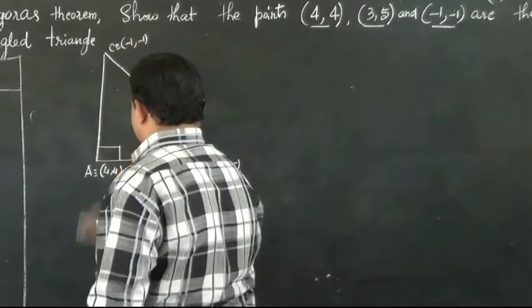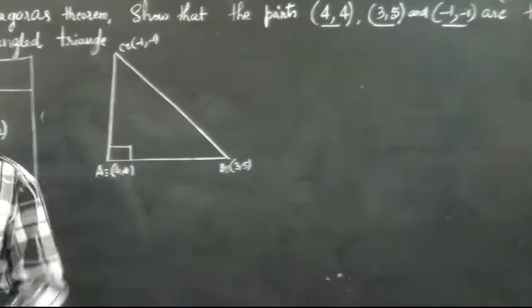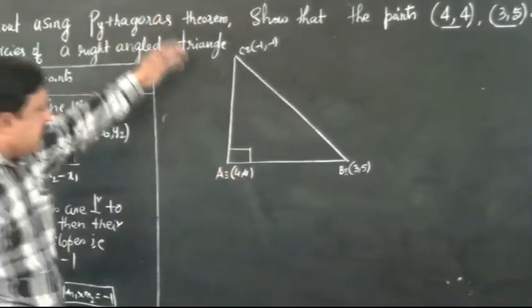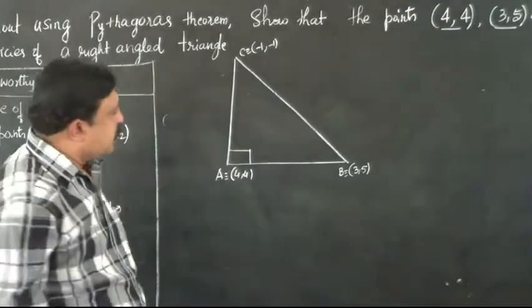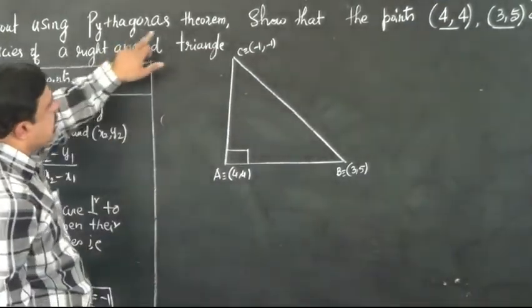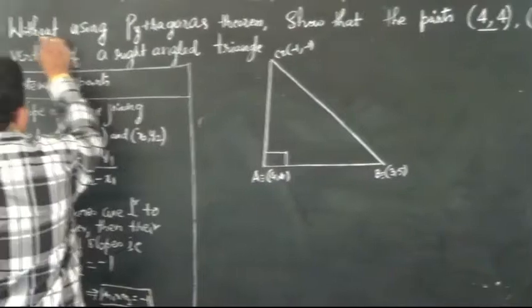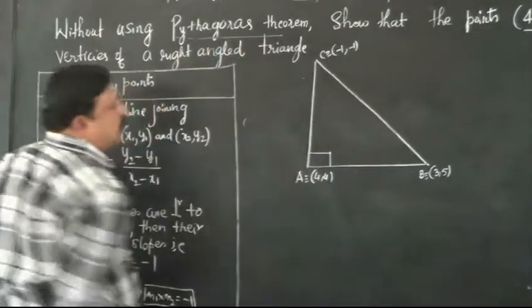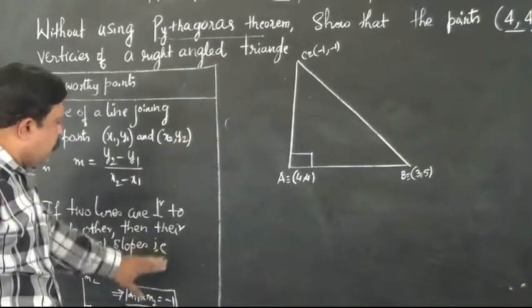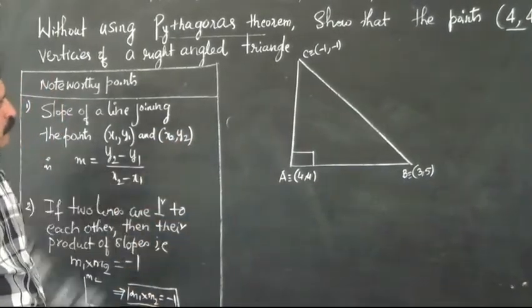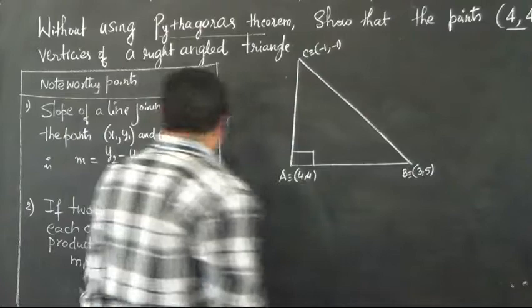Without using Pythagorean theorem—Pythagorean theorem is BC squared equals AC squared plus AB squared. We could also prove by using distance formula, but it has been clearly asked without using Pythagorean theorem. We have to prove that this is a right-angled triangle. So these are the two points that we are going to make use to do this problem.